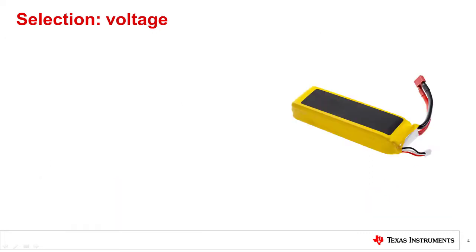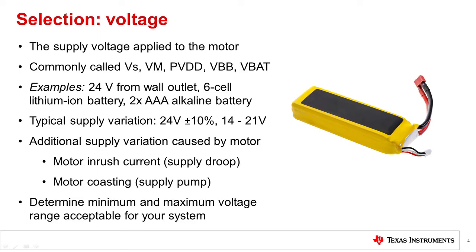One key parameter to consider during the selection process is the voltage. The supply voltage is commonly written as VS, VM, PVDD, VBB, or VBAT. In any motor drive system, there is a supply that will be the power source for the motor drive. These supplies can take many forms, but are primarily plug-in or battery. Plug-in sources take the high voltage AC from a wall outlet and transform it to a lower voltage, for example 24 or 12V. In any system, there will be a typical supply voltage with some variation, for example a regulated 24V with a plus or minus 10% in operation.